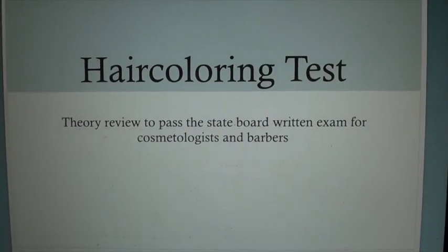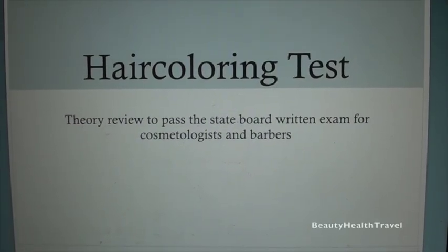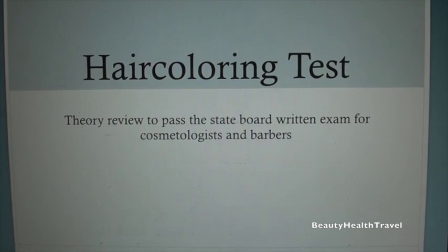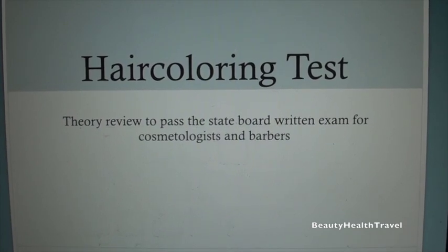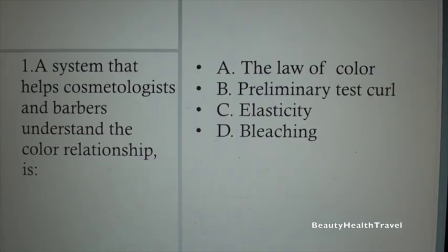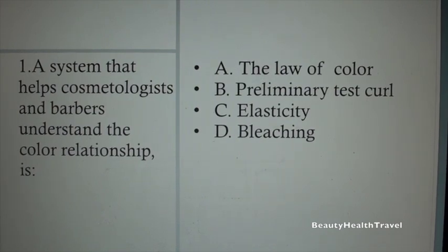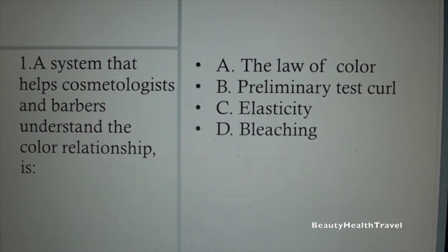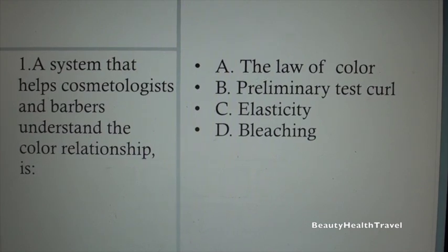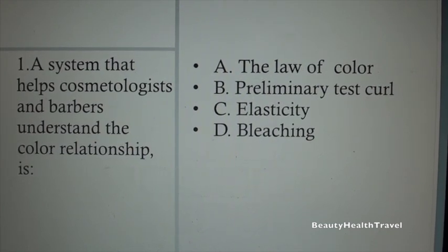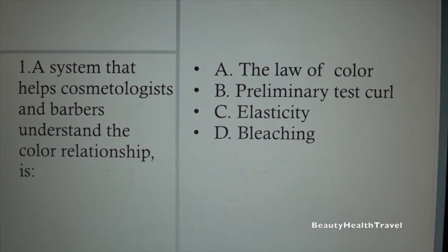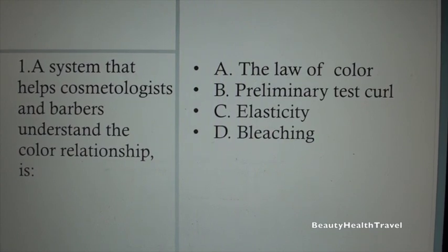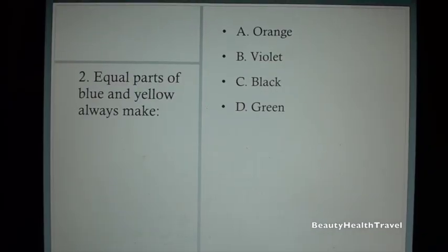Hair Coloring Test Theory Review to Pass the State Board Written Exam for Cosmetologists and Barbers. Question 1: A system that helps cosmetologists and barbers understand the color relationship is: A. The Law of Color, B. Preliminary Test Curl, C. Elasticity, D. Bleaching.